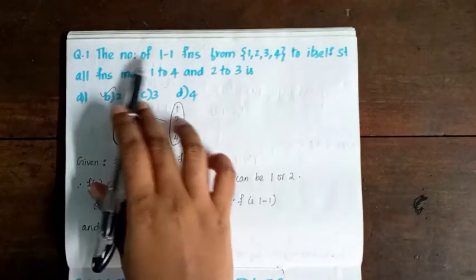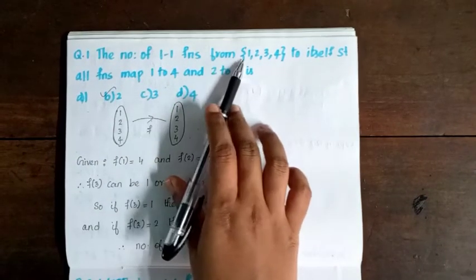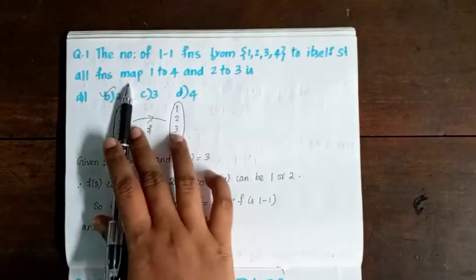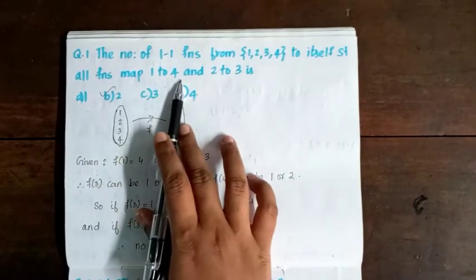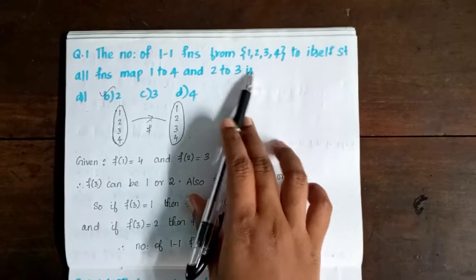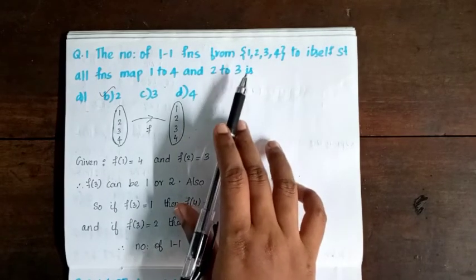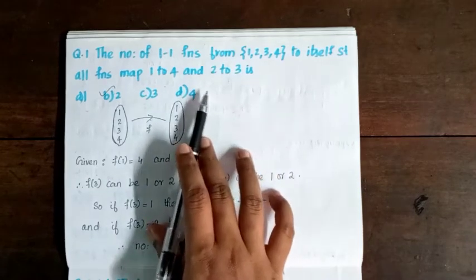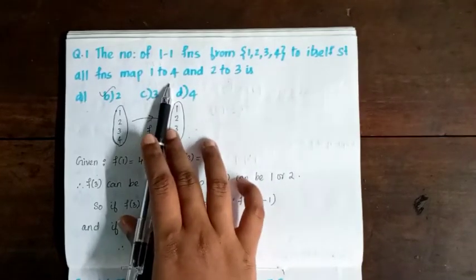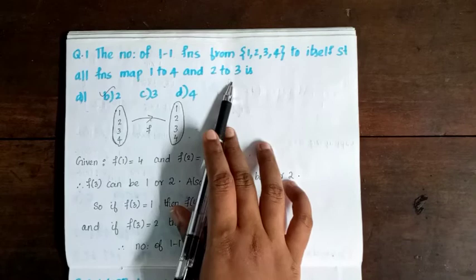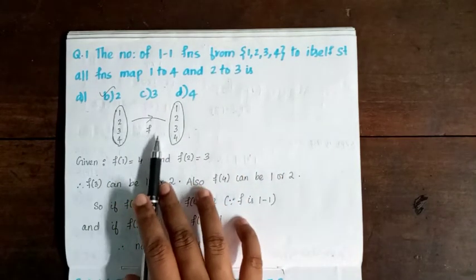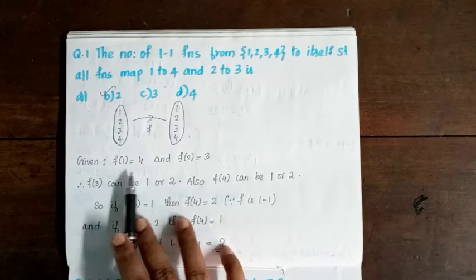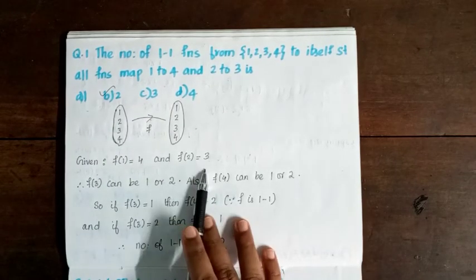Question 1. The number of 1-1 functions from the set {1, 2, 3, 4} to itself such that all functions map 1 to 4 and 2 to 3. Given f(1) = 4 and f(2) = 3, we need to find the number of such one-to-one functions.